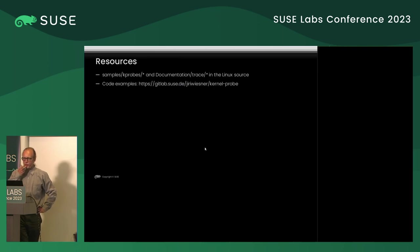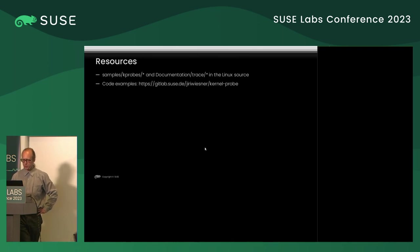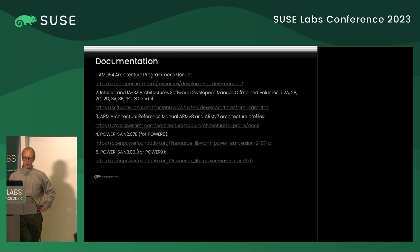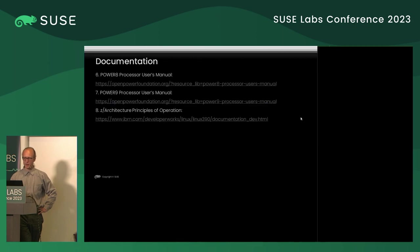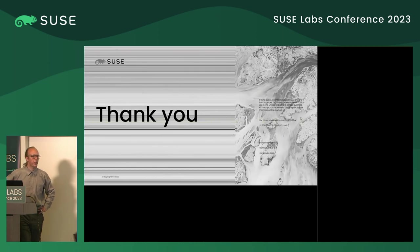As for resources, there's documentation in the Linux kernel source. If you'd like to see some code I use in real life — not these simplified examples — I recommend this GitLab repository. For documentation on how the machine works, there are ample things to learn and I heartily recommend all of these. Thank you for your attention.